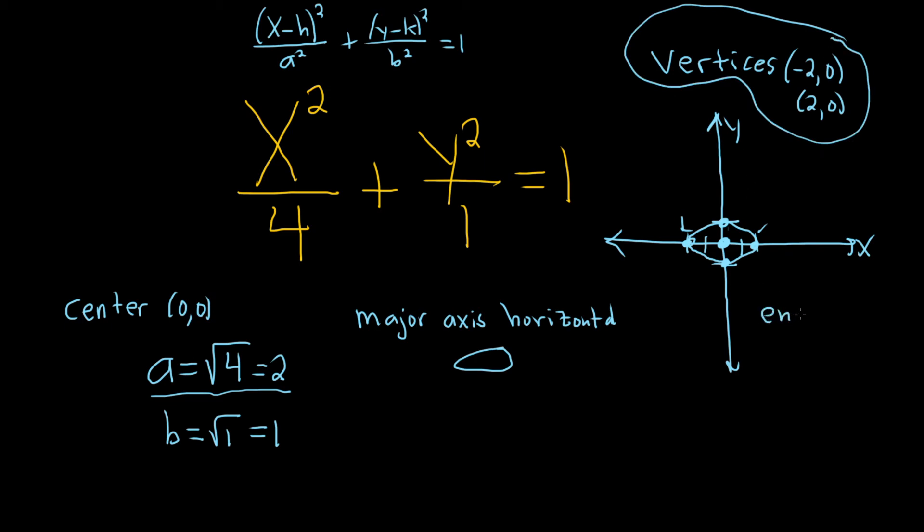And the endpoints of the minor axis, that would be this point there and this point here. So it would be 0,1 and 0, negative 1. And those would be the endpoints of the major axis.